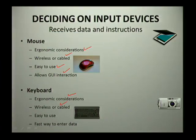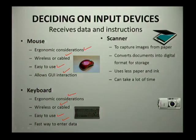Keyboards are easy to use and are actually a faster way of entering data onto a system. The next device is a scanner. Scanners capture images from paper and convert your documents into digital format for storage.